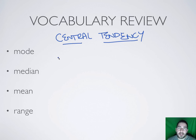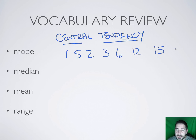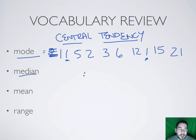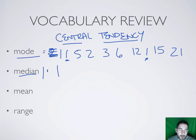The mode is the most common response or number. So if I have a number set — 1, 5, 2, 3, 6, 12, 15, 21, and another 1 — the mode is 1 because it's mentioned twice and no other number appears more than once. The median is the absolute middle number. You rank-order all your numbers from 1 to 21, and whichever lands in the middle is your median. Think of the median like the median strip on a road — it's right in the middle.